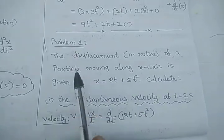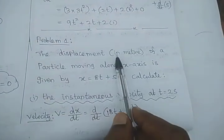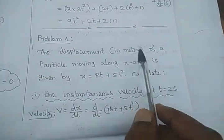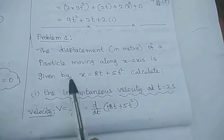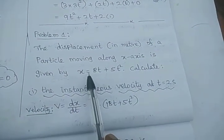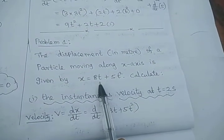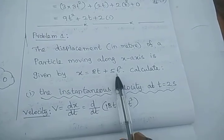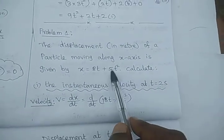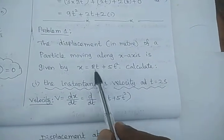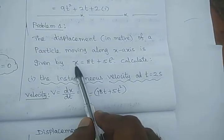In this session, we are going to see one problem. The displacement in meters of a particle moving along the x-axis is given by the equation x equals 18t plus 5t squared. This polynomial represents the displacement of the particle.